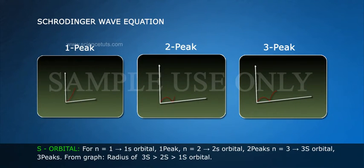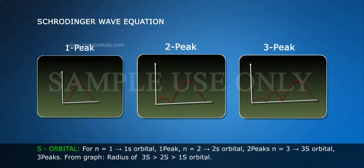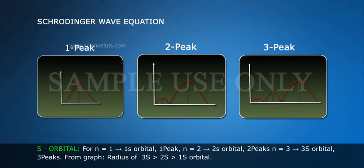S orbital. For n is equal to 1, 1S orbital has 1 peak. N is equal to 2, 2S orbital has 2 peaks. N is equal to 3, 3S orbital has 3 peaks.